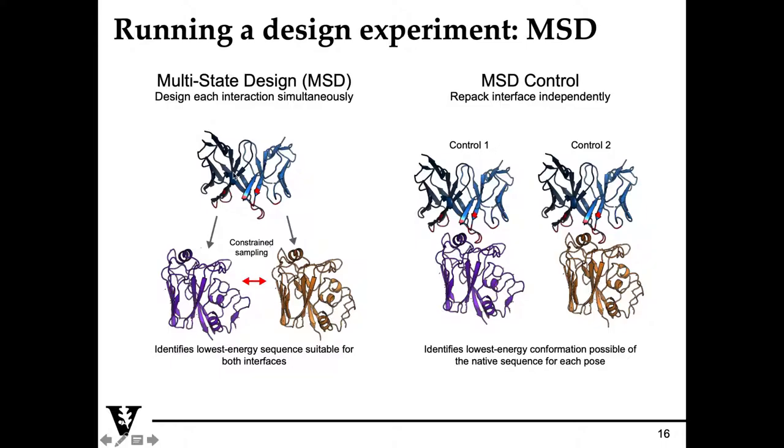For this particular experiment, for the multi-design experiment, what we have is the same antibody that we've used for single-state design and the same interface residues. What we're trying to do is optimize the binding energy of these residues so that the sequences you're identifying have the average lowest binding energy against two antigens.